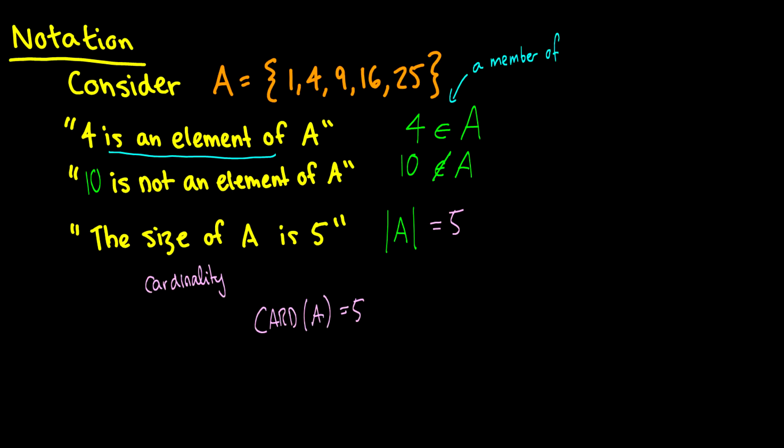Sometimes they will write it in books as capital card, and with A as like a function parameter. This is the same thing. It's just that one of the notation looks a little bit cleaner, and it's definitely more convenient to write the absolute value of A rather than a capital card.